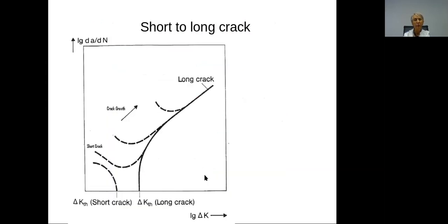This is another way to describe the propagation of long cracks versus short cracks. Short cracks usually grow a little faster than longer ones until you reach the threshold for long crack propagation. This transition can differ depending on the dimension of the starting small crack and on the material-environment situation.